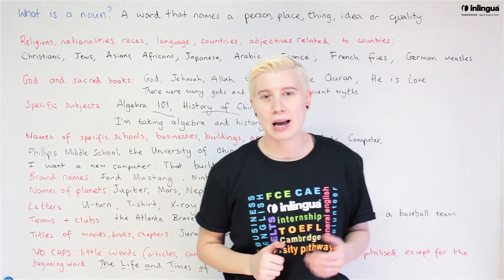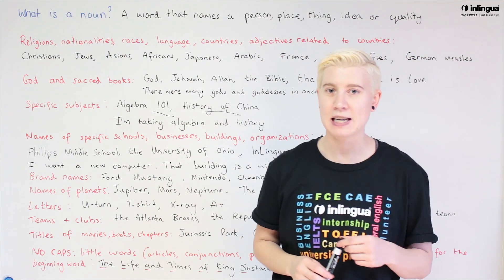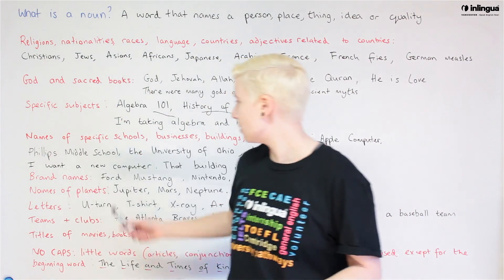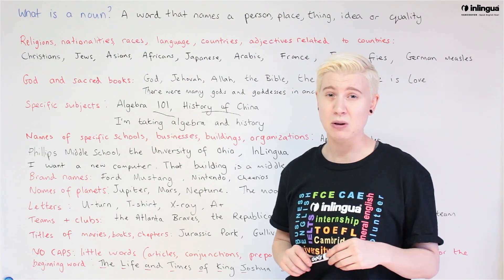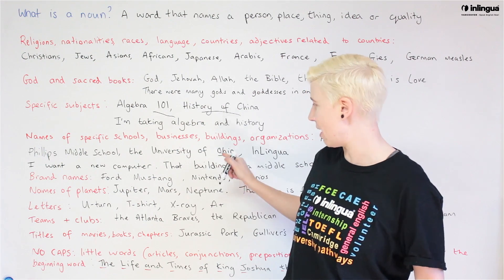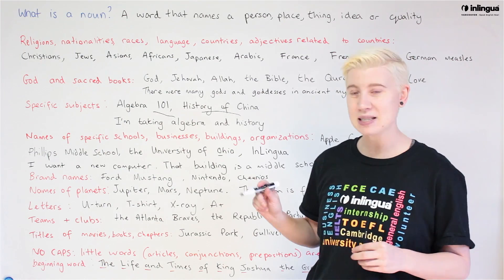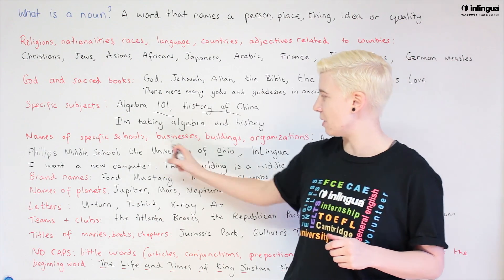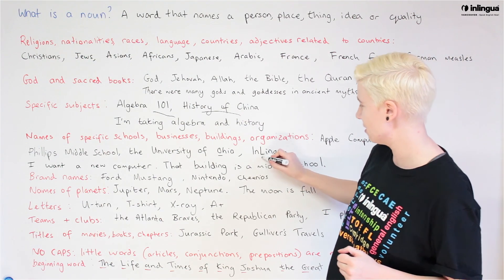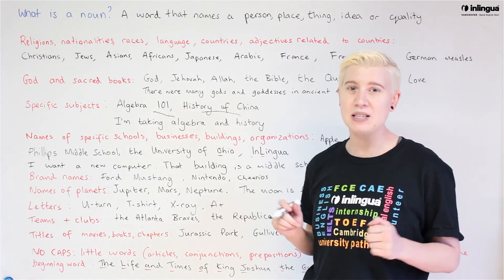We also use capitals for the names of specific schools, businesses, buildings and organizations. For example, Apple Computer the company, Philips Middle School, the University of Ohio. Ohio, being a state, would also need a capital because it's a specific place. But 'university' here also needs a capital as part of the name. Inlingua has two capitals — the capital at the front is the name of the specific school.